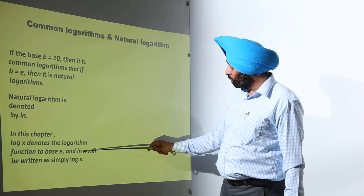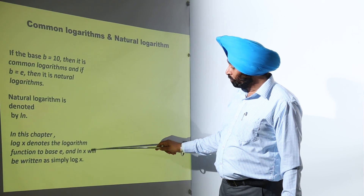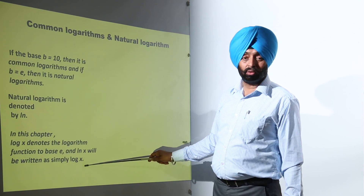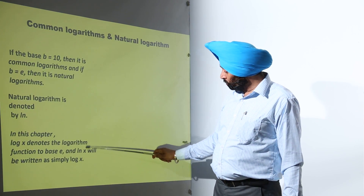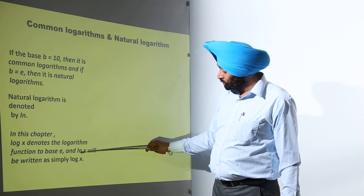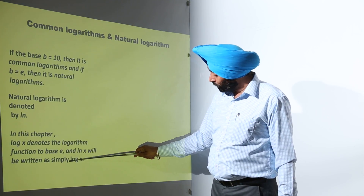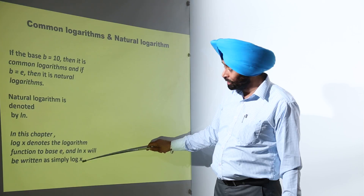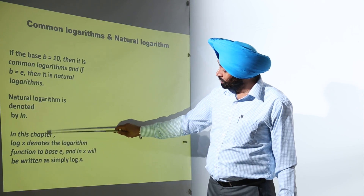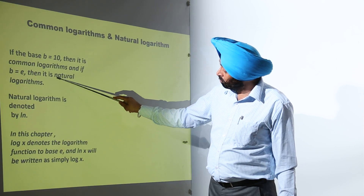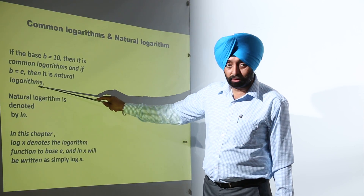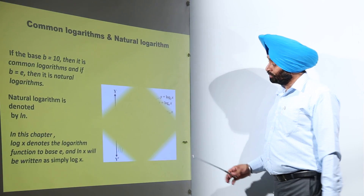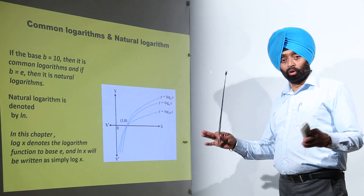In this chapter, log x denotes the logarithm function to base e, and log x will be written simply as log(x). Normally in the books you will find log x written in this form, with base e. This is what natural logarithm is.